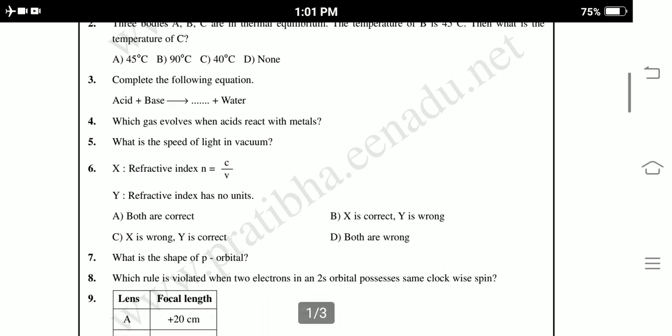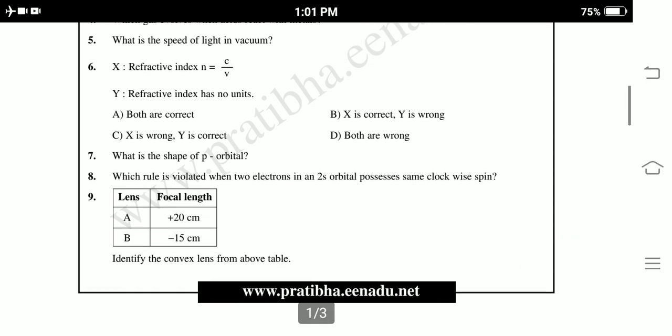Seventh, what is the shape of P orbital? Eighth one, which rule is violated when two electrons in two S orbital possess same clockwise spin? Next, ninth, length, focal length.